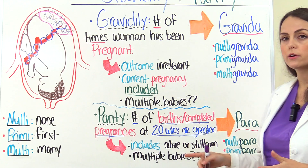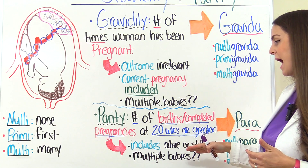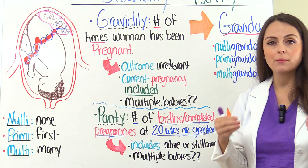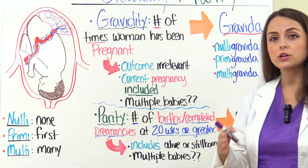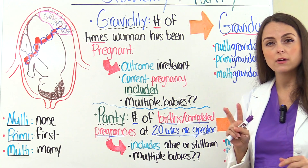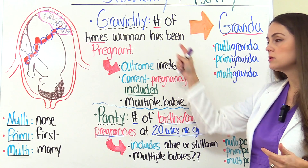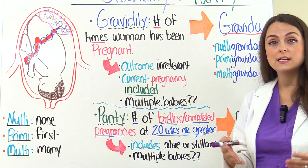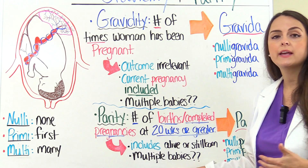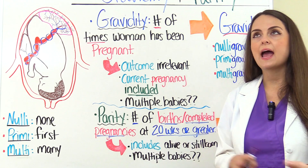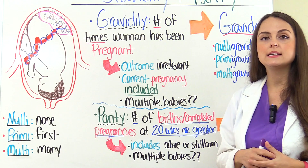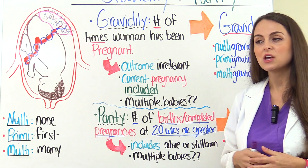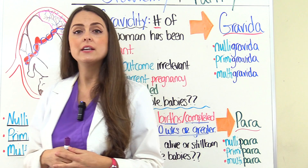Parity is the number of births or completed pregnancies that a woman has had at 20 weeks gestation or greater. We're talking about the woman having completed the pregnancy, meaning she's delivered the baby and it has left her body, at 20 weeks or greater. Keep those two parts of this definition in mind so you don't get confused between the two. This includes babies who are born alive or stillborn. And for multiple babies — if she had twins at 37 weeks, we would count that as one. We're not calculating based on how many babies she delivered.